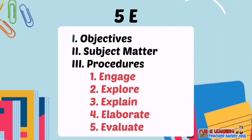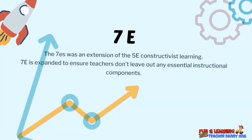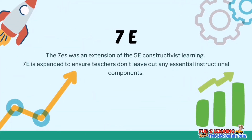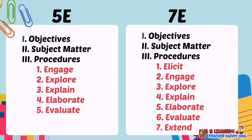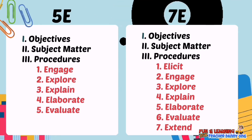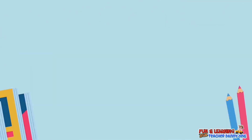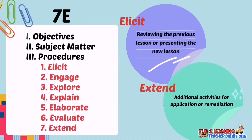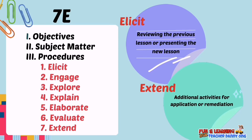The 7E model is an extension of the 5E constructivist learning model, expanded to ensure teachers don't leave out any essential instructional components. Two parts are added: the first is the Elicit phase, placed before Engage, where we review the previous lesson or present the new lesson — equivalent to the presentation phase in the universal plan. The last addition is Extend, which includes additional activities for application or remediation — equivalent to the assignment in the universal plan.